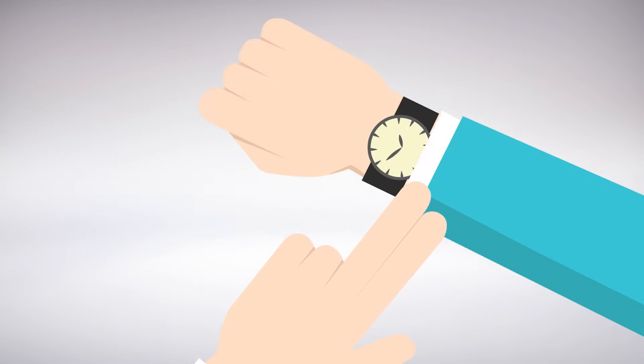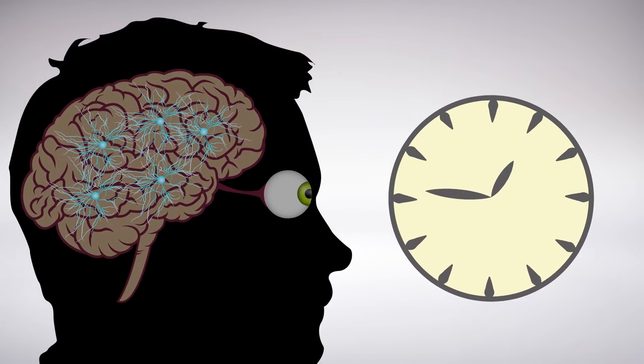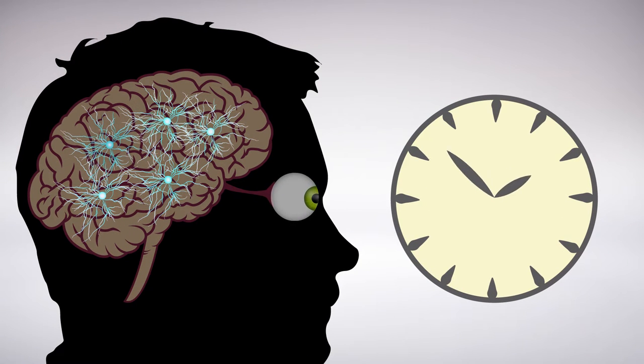When you want to know what time it is, a quick glance at your watch is all you need. Even though there's only a slight difference in angle, cells in your brain respond differently to the orientation of a clock hand pointing at 3 versus 4.